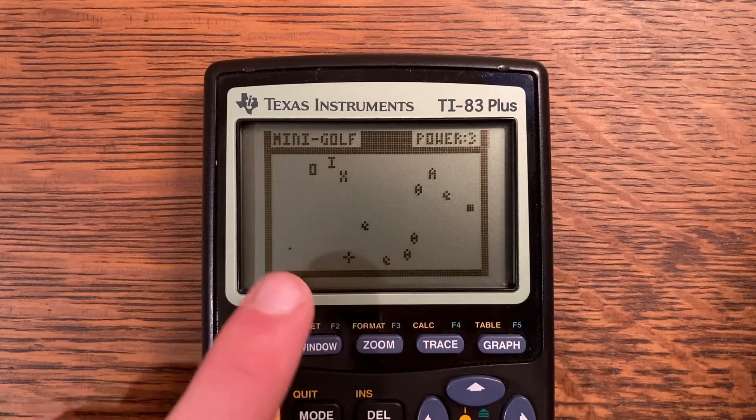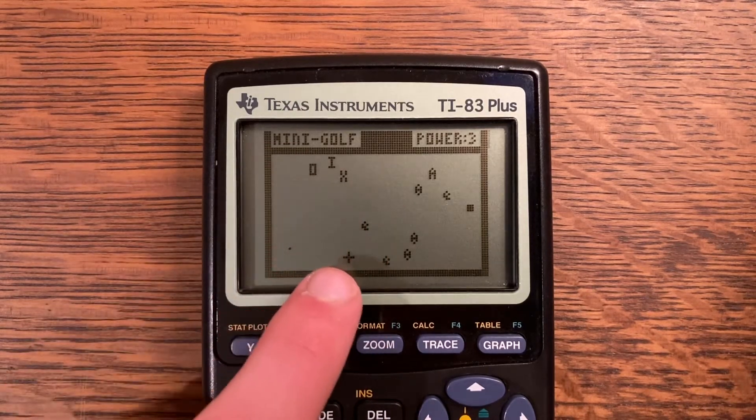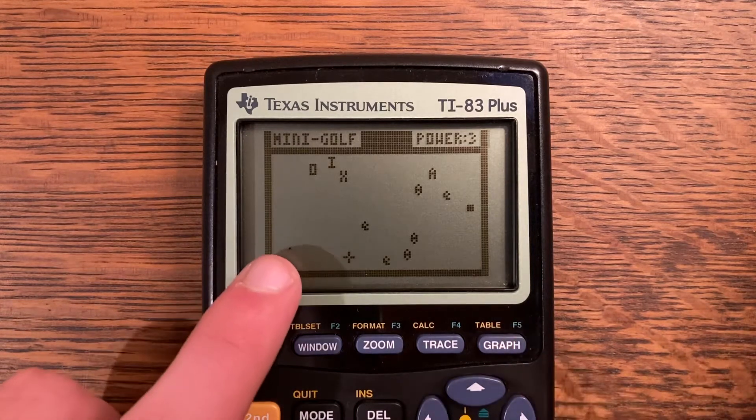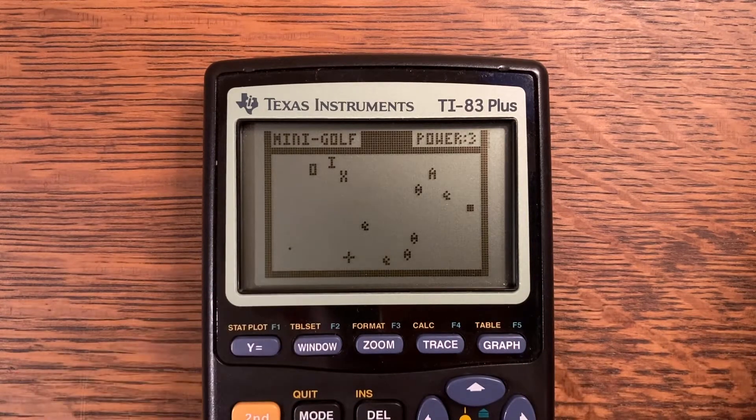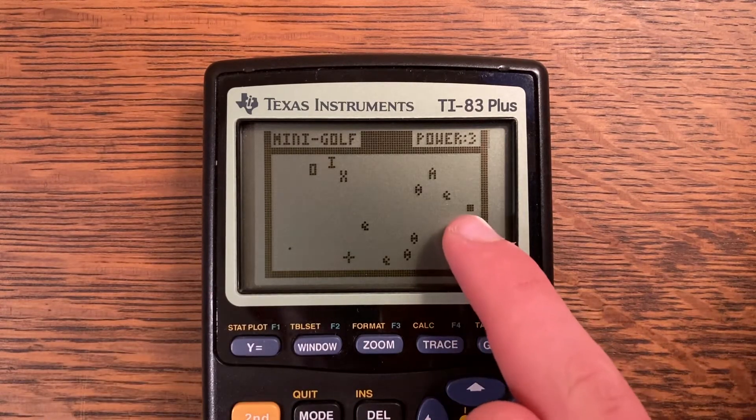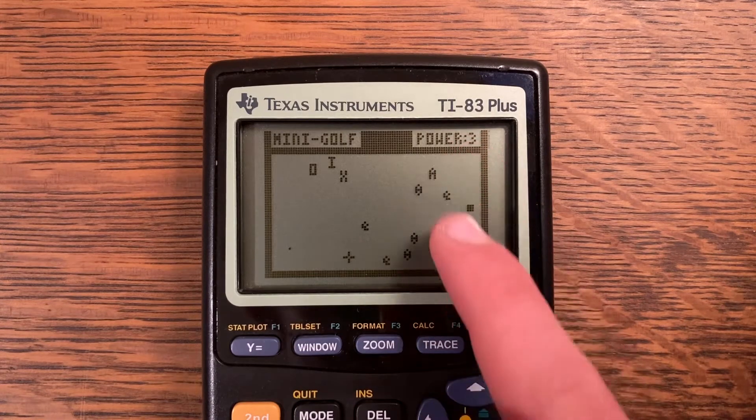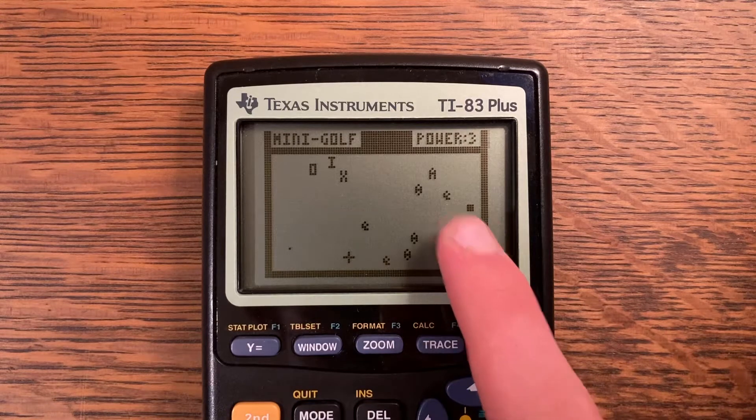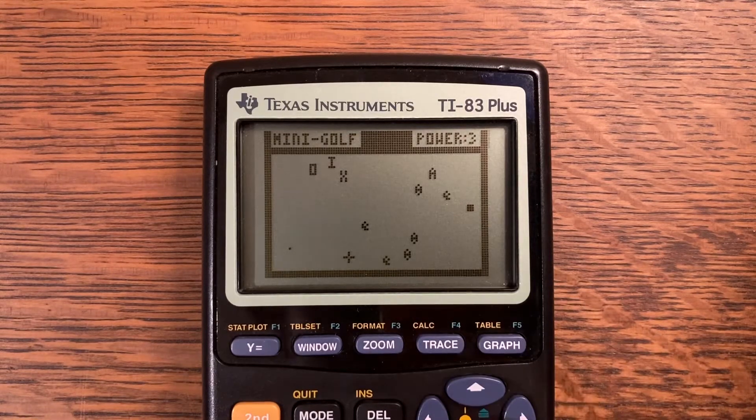If it hits a pixel that is filled in, like any of the obstacles or the walls, it will bounce off that. So your ball is over here in the corner. It's just a singular pixel. And then the hole randomly generates anywhere along the Y-axis here and it's just that big block of nine dots.